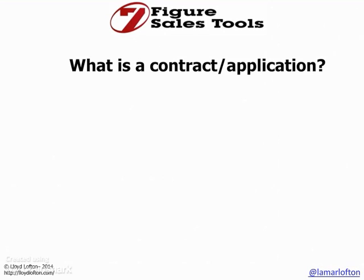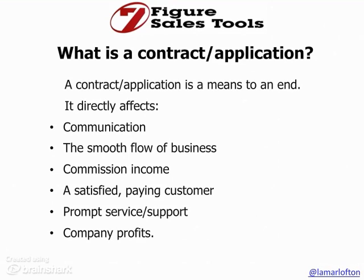I want to talk about what is that contract or application — what does it represent? What does it mean for you, your company, and your prospect? It's important to have a good gut check of what that contract represents so that you don't get hung up on the minors and can focus on the majors in your business. That contract or application is a means to an end — it represents the roadmap to getting paid and building your book of business. It directly affects communication: between you and the prospect, between you and your company, between your prospect and your company, and it affects your communication with future prospects and future customers.